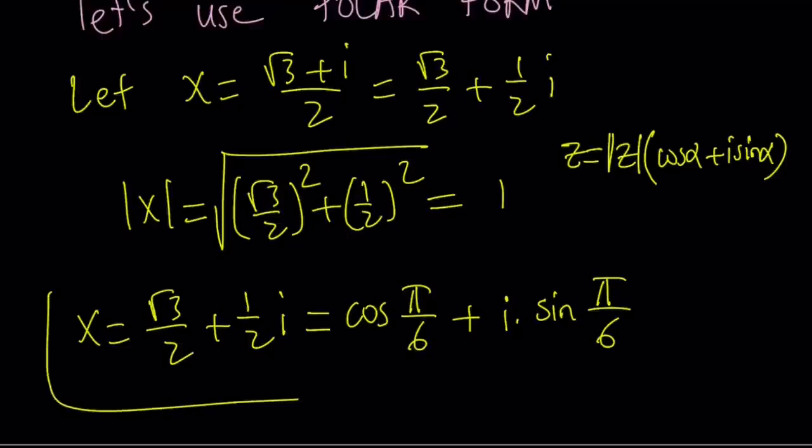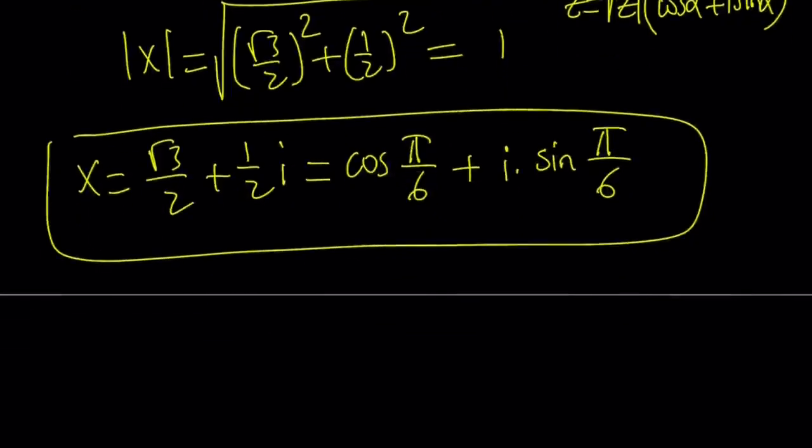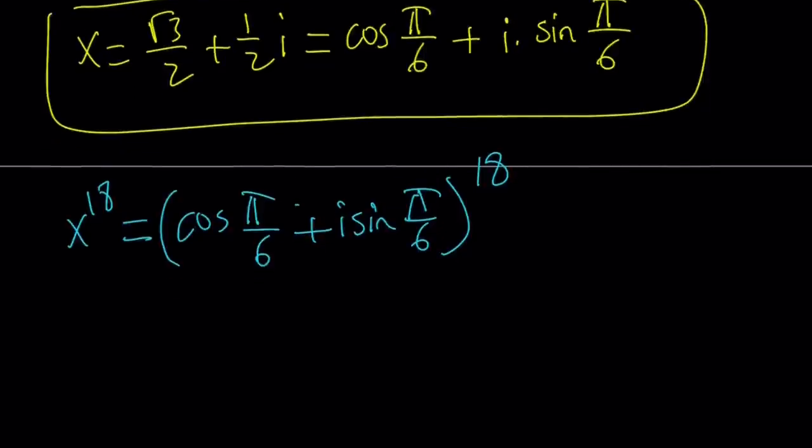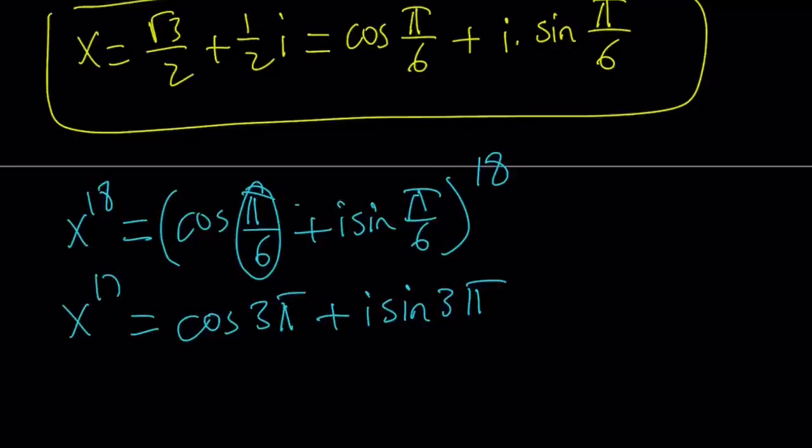Now, once it's in the polar form, obviously very easy to raise it to the 18th power. How do you raise something in polar form using De Moivre's theorem? Just raise this number to the 18th power, and that's fairly easy to do. All you have to do is multiply the modulus or raise the modulus to the 18th power, but we don't have a modulus, it's 1. So just multiply the argument by 18. That gives you cosine of 3 pi plus i sine 3 pi. So that is x to the power 18. Cosine of 3 pi is the same as cosine of pi because you just subtract 2 pi from it. And that is equal to negative 1. And sine of 3 pi is 0. So x to the 18th power becomes negative 1.